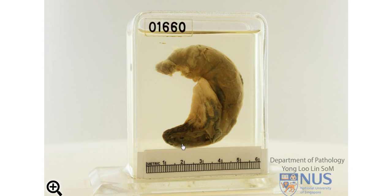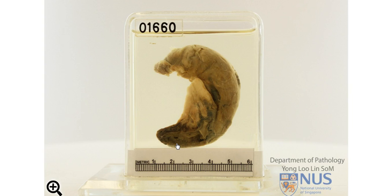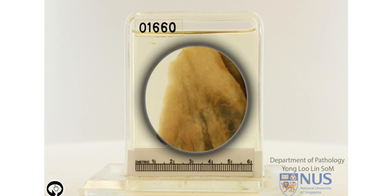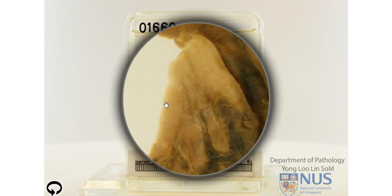Now looking at the tip of the appendix, we can appreciate that the colour is rather dark in the wall of the appendix, and this is due to congestion and hemorrhage.